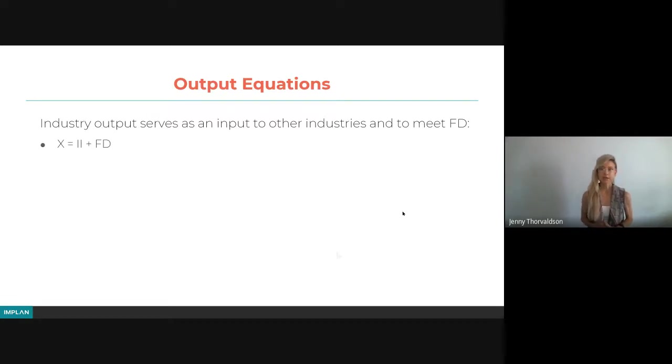When we put it all together, industry output serves as an input either to other industries or to meet final demand. Every industry's output has to go somewhere. It either goes to intermediate inputs of other industries or goes to final demand. So households buy it, government buys it, or we're exporting it, or it could go into inventory. Between intermediate inputs and final demand, all of our output is going somewhere, one of those two places. This is just a simple equation that tells you that industry output is going to whatever it goes to serve as inputs to other industries and whatever goes towards serving final demand.